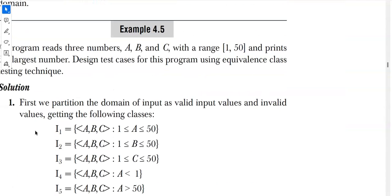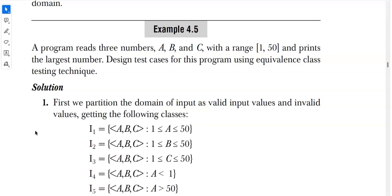That concludes the solution. The question asked: a program reads three numbers a, b, c with range 1 to 50 and finds the largest number — design test cases using equivalence class testing. You can also try with two variables a, b or four variables a, b, c, d and different ranges like 1 to 100 or 1 to 200. Practice at least one or two variations. Please comment if you understood clearly, and mention any doubts in the comment box. Thank you.